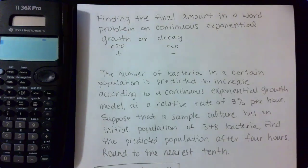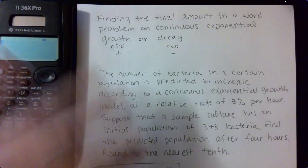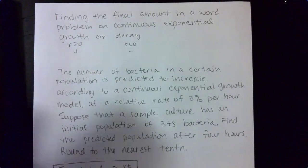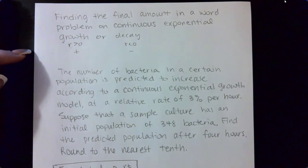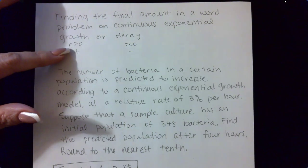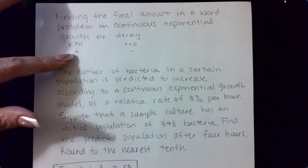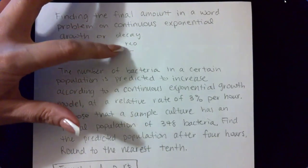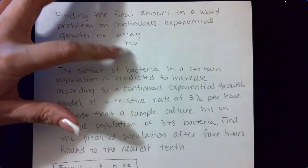Okay, in this video, we are going to talk about finding the final amount in a word problem on continuous exponential growth or decay. If it is a growth problem, then your rate of growth is going to be greater than zero or positive. If it is a decay, then your rate is going to be less than zero or negative.